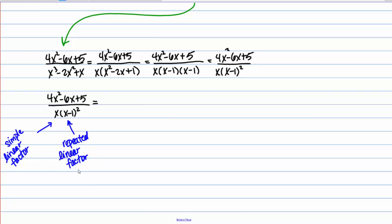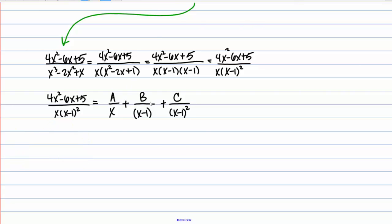We need to write out the form of the partial fraction decomposition. For simple linear factors, the partial fraction is a constant over that factor — so the first term is A over x, where A is an unknown constant. For the repeated linear factor (x minus 1) squared, we include that linear factor raised to each power up to the power it appears in the denominator: something over x minus 1 plus something over (x minus 1) squared. Those unknown constants are B and C, which we'll solve for.